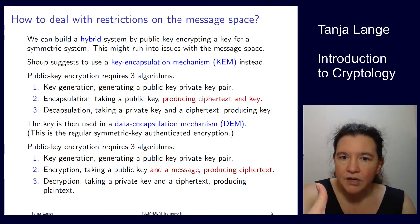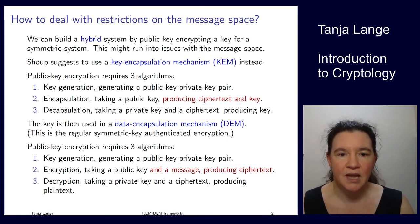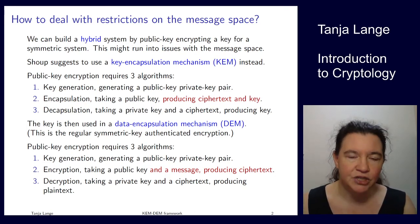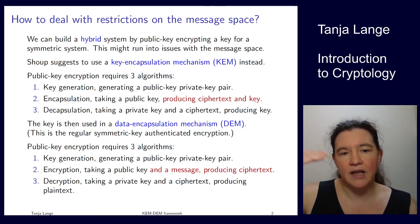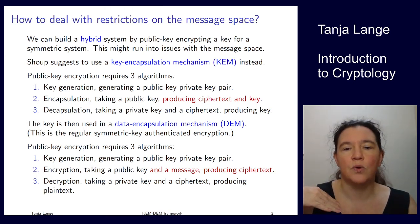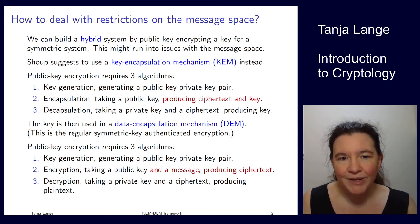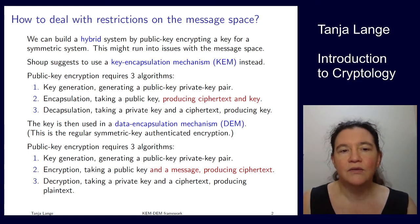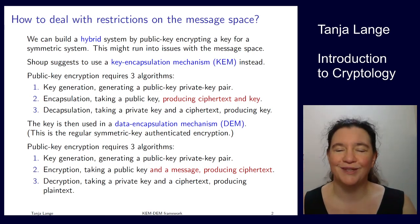The other party also needs to get this key, so they perform decapsulation — the opposite of encapsulation. Decapsulation takes the private key and the ciphertext, and unlike in public key encryption where it produces a plaintext, here it produces the key. The key in the decapsulation step must be the same as in the encapsulation step. The system is sound if encapsulation and decapsulation produce the same key when used with the same ciphertext.